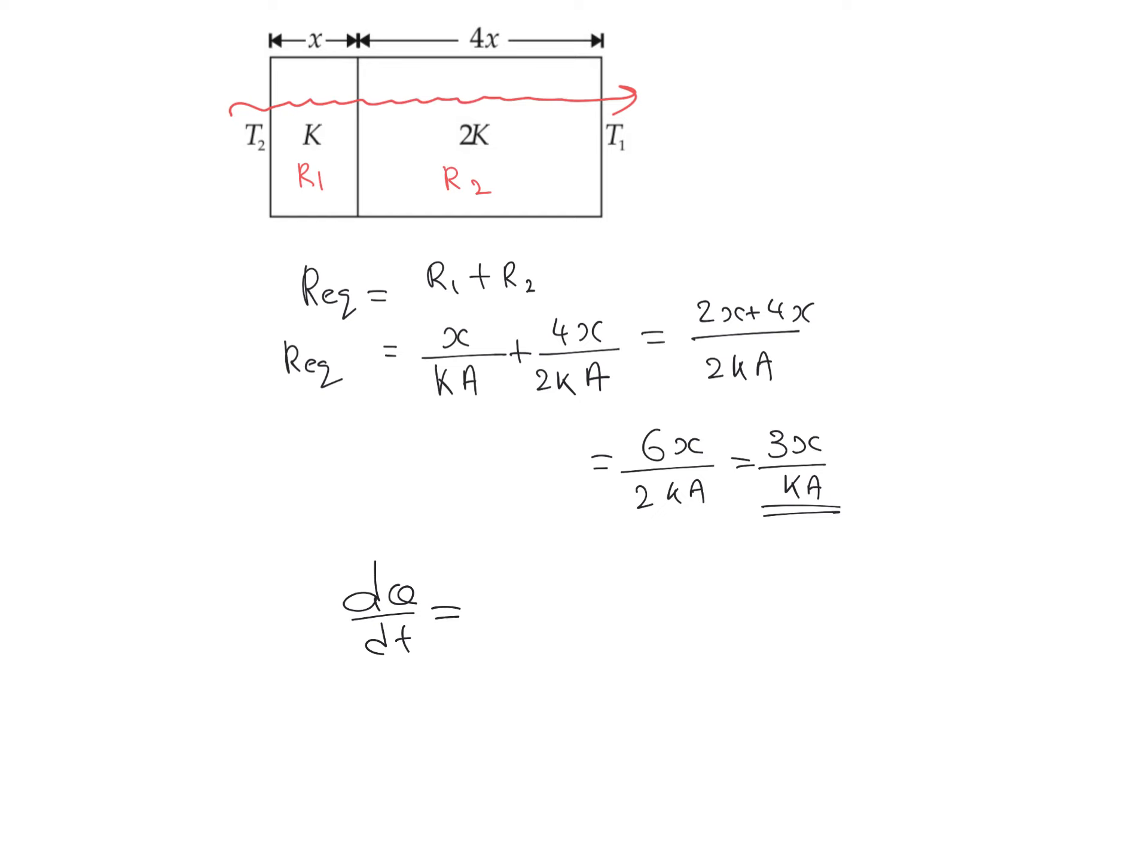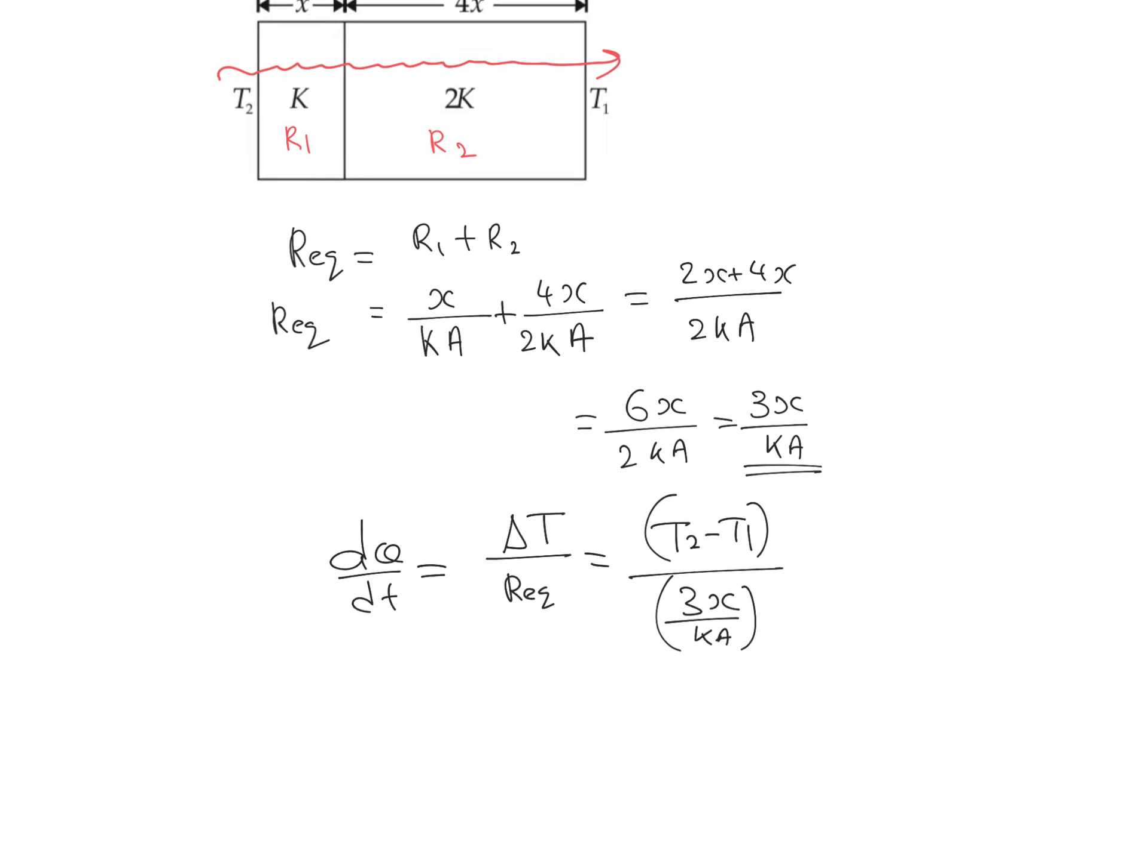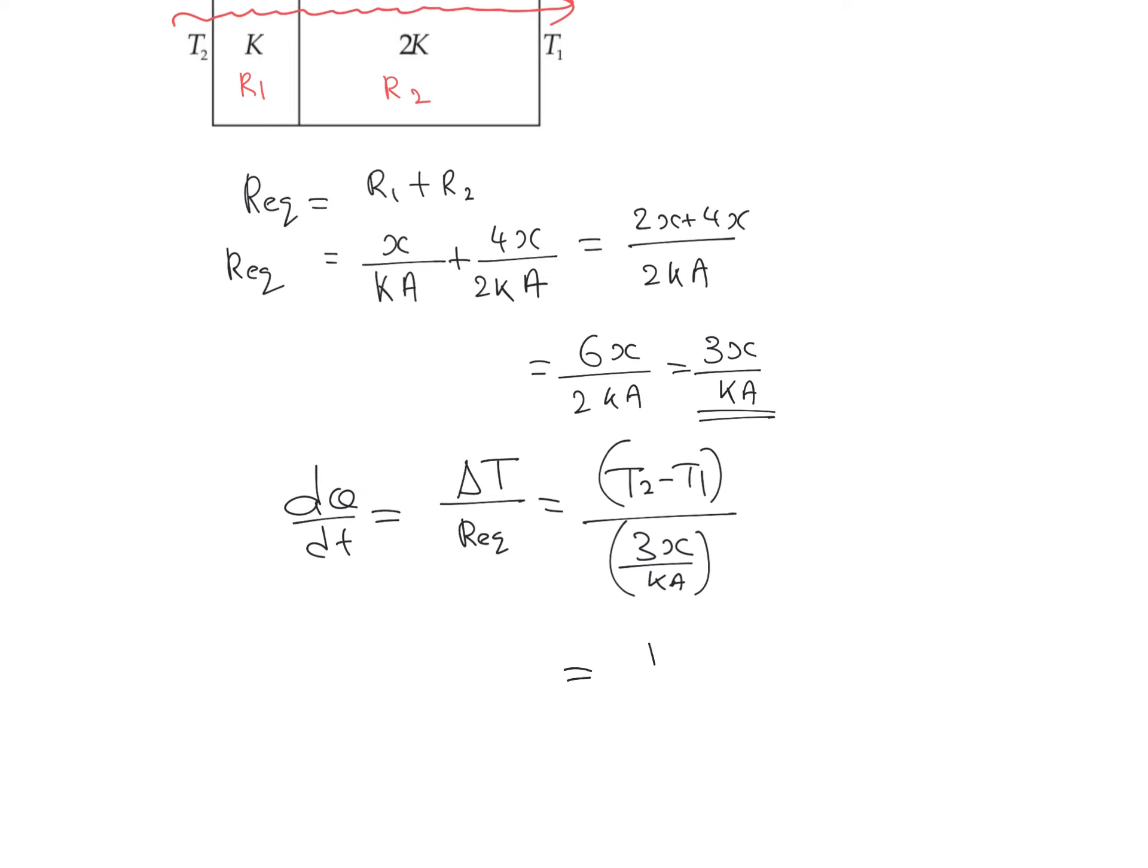We can find the rate of flow of energy dQ/dt equals total temperature difference divided by equivalent thermal resistance. The total temperature difference is T2 minus T1, and the equivalent resistance is 3x/(KA), so this equals (T2-T1)·KA/(3x).